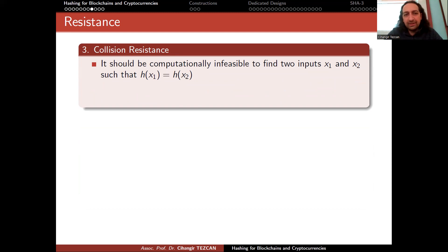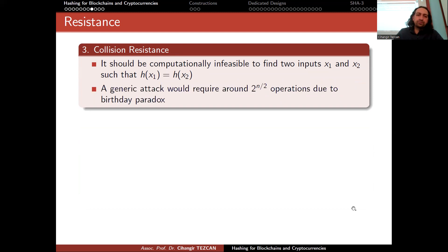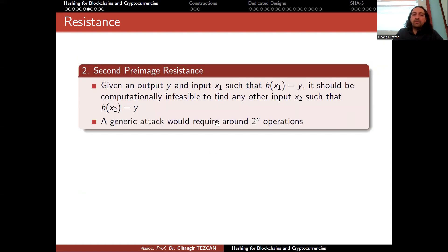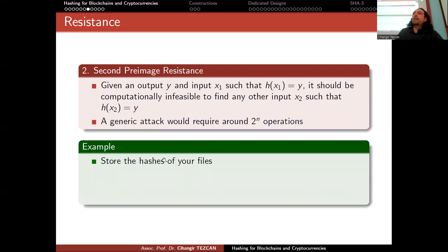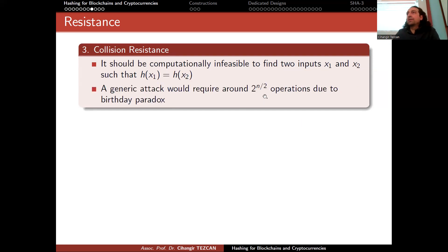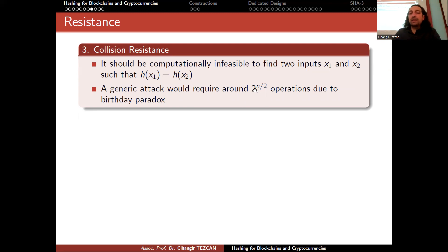Finally, we need collision resistance. It should be computationally infeasible to find two inputs x1 and x2 such that h(x1) equals h(x2). This is similar to the previous property, but in second preimage resistance we fixed x1. In collision resistance, nothing is fixed — you only have the hash function and are challenged to find any two inputs with the same output. You have more freedom, so a generic attack actually costs less, like 2^(n/2) — the square root of the previous attacks. To achieve 128-bit security, we use twice the output length, which is why we use SHA-256.